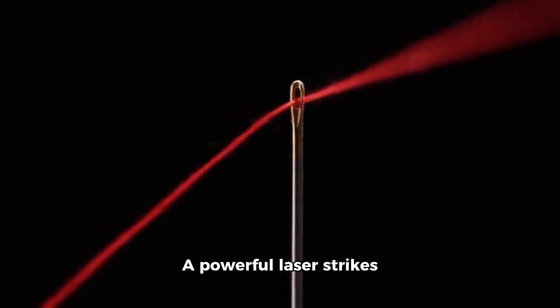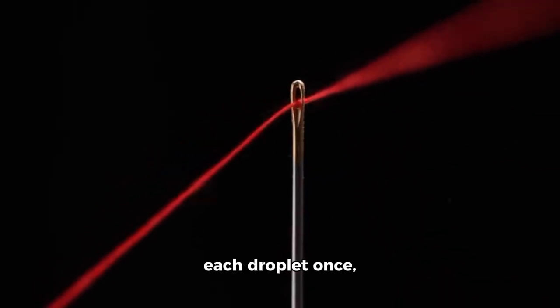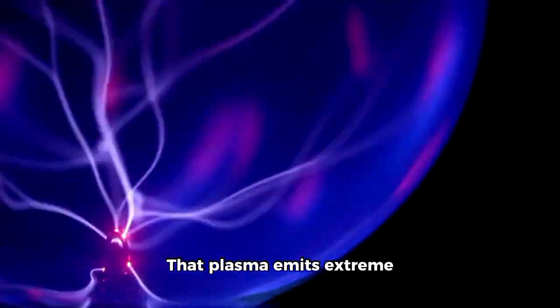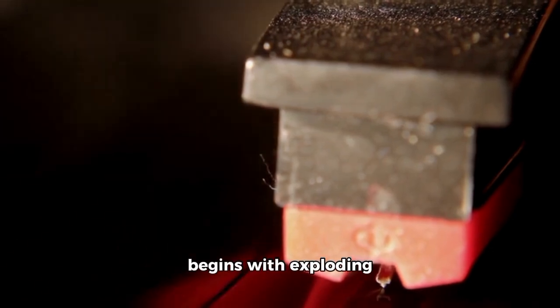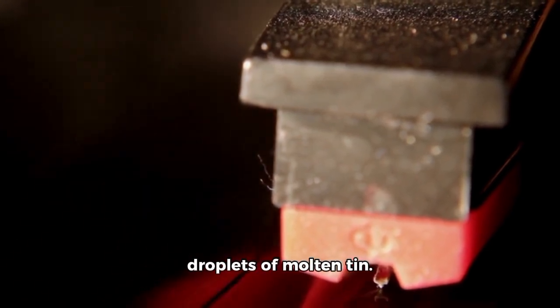A powerful laser strikes each droplet once, flattening it into a thin disc. A second laser hits it again, vaporizing it into an extremely hot plasma. That plasma emits extreme ultraviolet light. Yes, the foundation of every advanced chip begins with exploding droplets of molten tin.